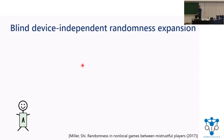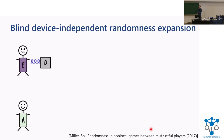So what's blind randomness expansion? This is an idea that goes back to this paper of Miller and Xi from 2017. The setup here is that we have one party, Alice, who is classical and who has a little bit of randomness and would like to make more randomness. But because she's classical, she can't just generate information-theoretic randomness herself.